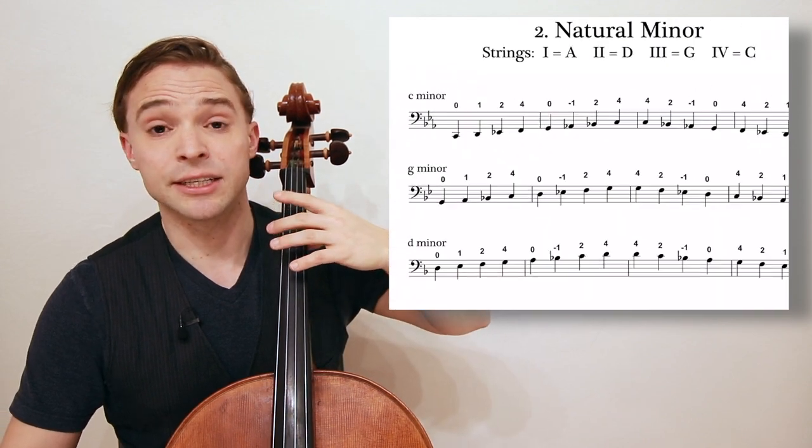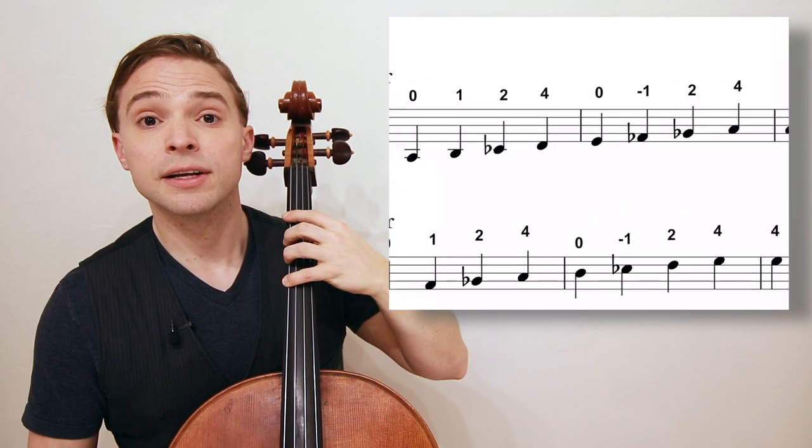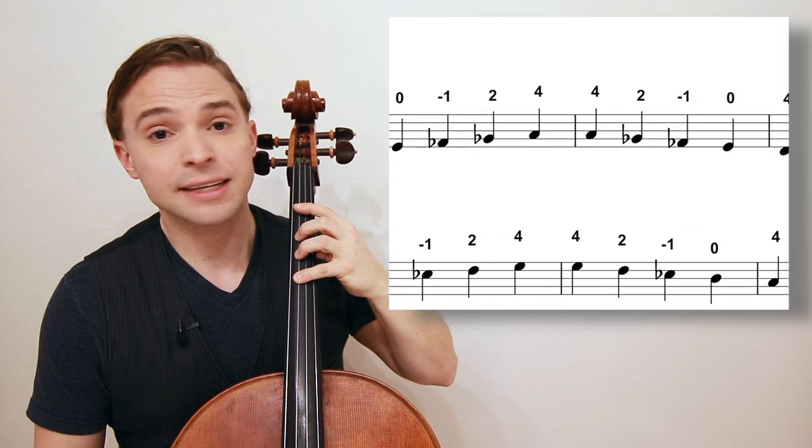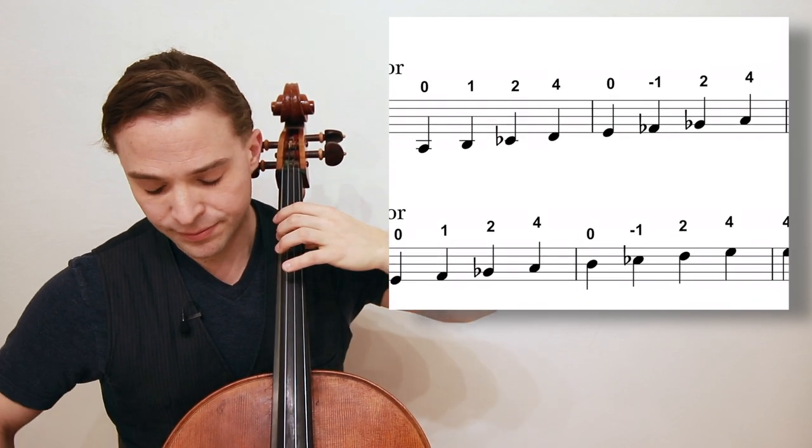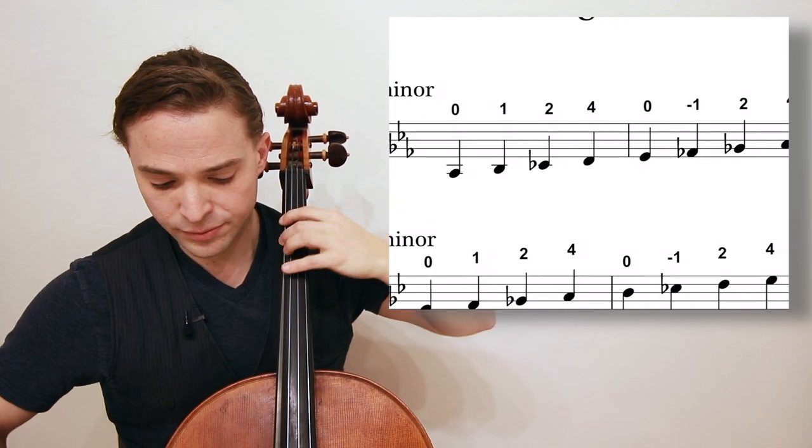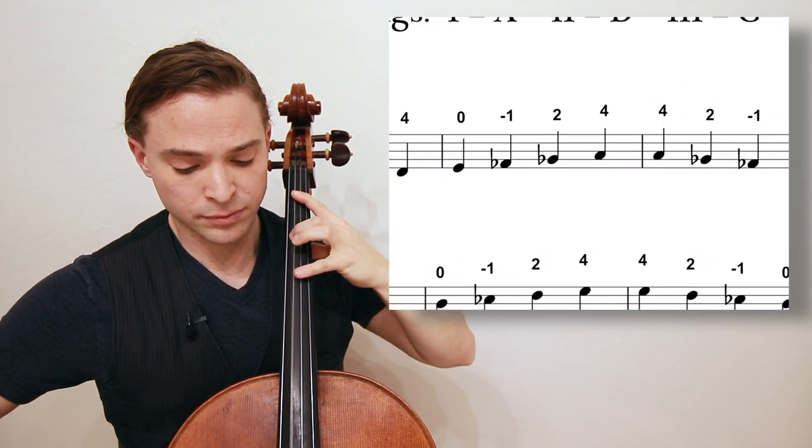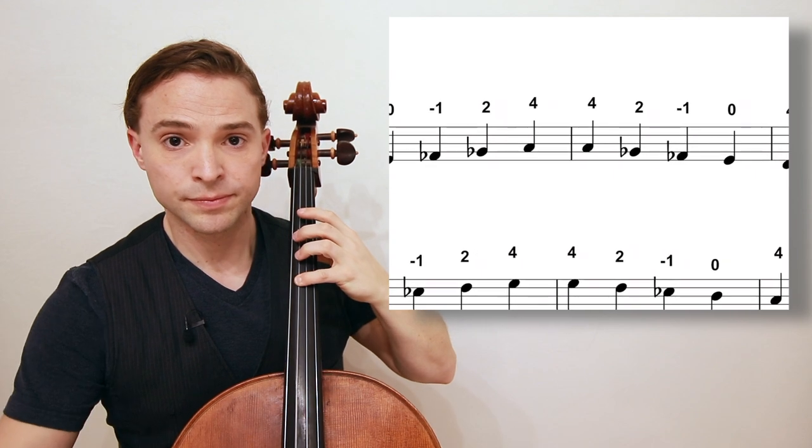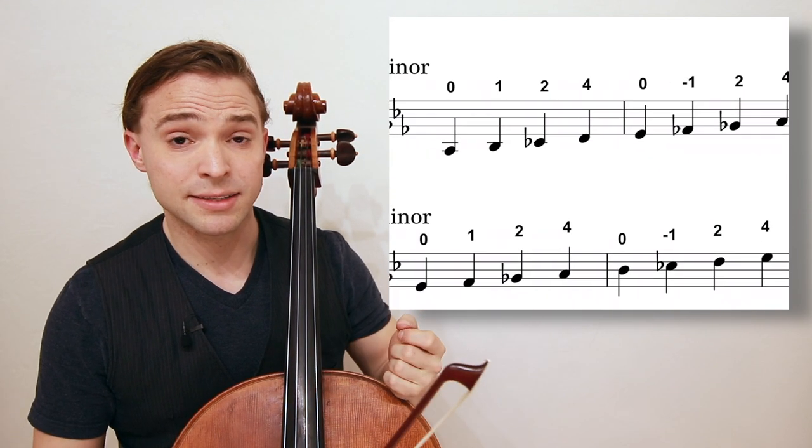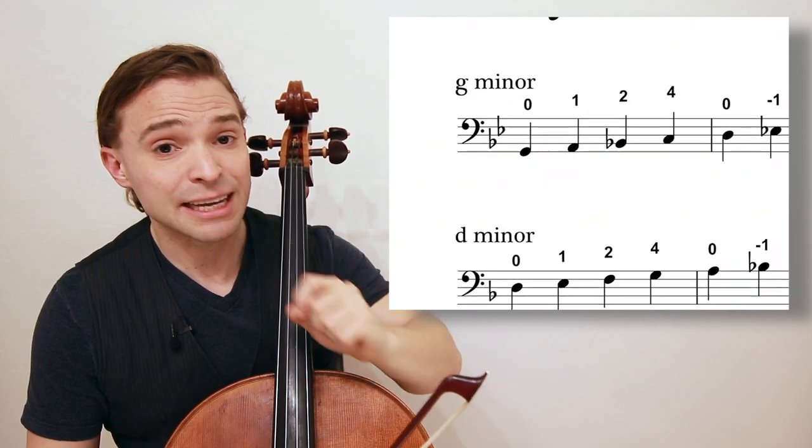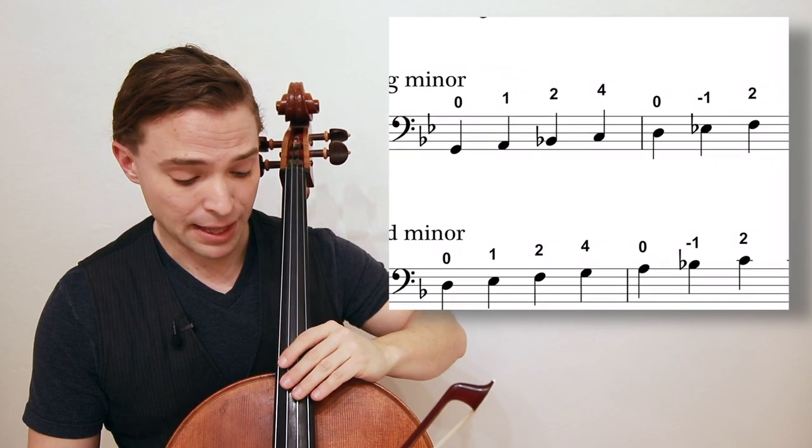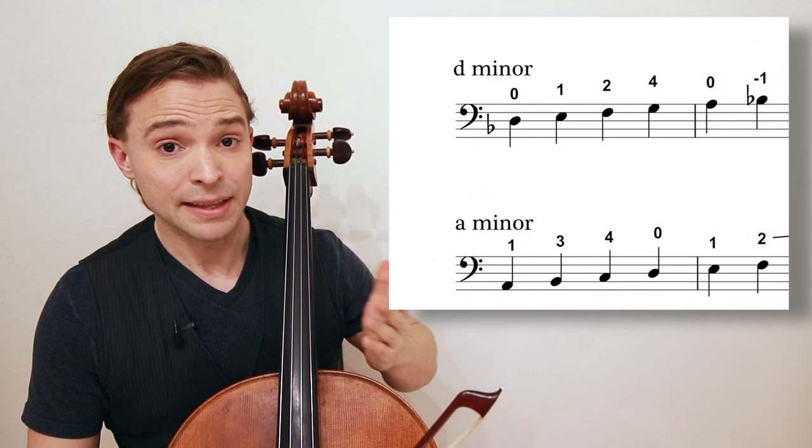And it's simply zero, one, two, four, zero, low one, two, four. That's all it is. Play that twice. Do the same thing in the exact same fingers for G minor and for D minor. That's all you need to know.